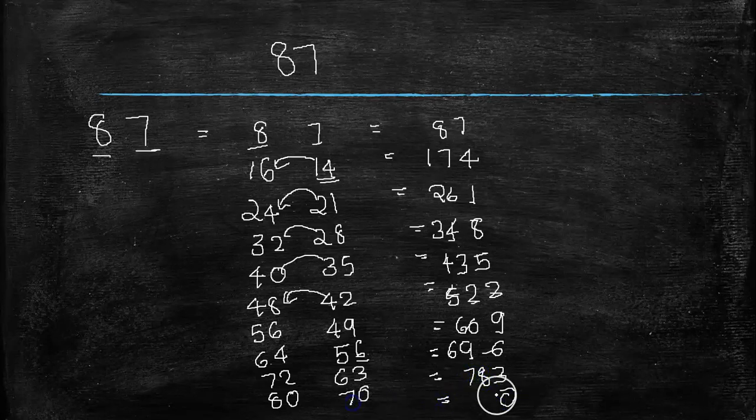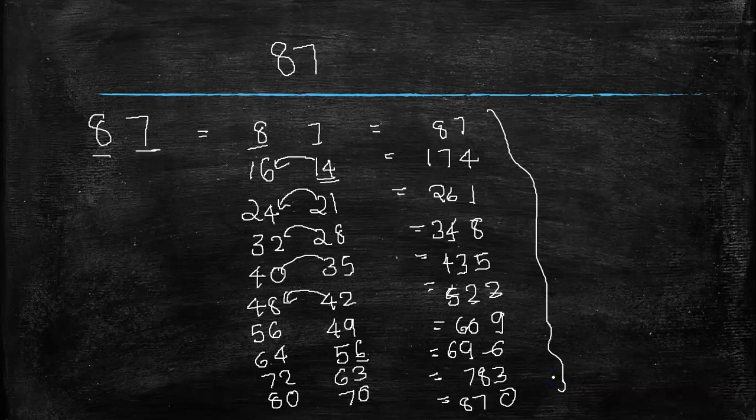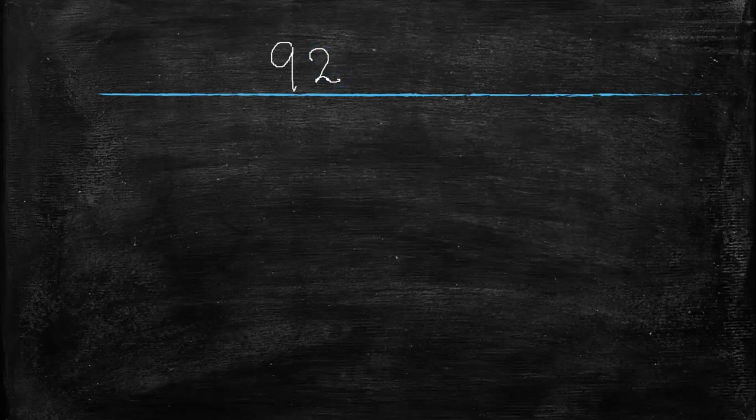Then here it is 0, then this 7 is added to this 80, that is 87. This is the 87 times table, very simple, right? Now we can go to the next number, that is 92. You may think that it's very difficult, but no.